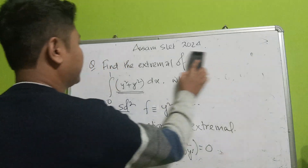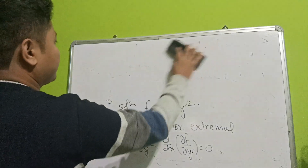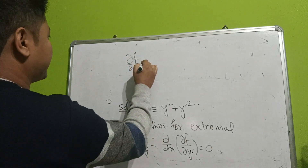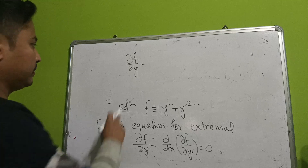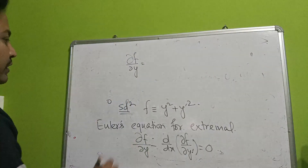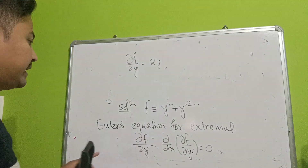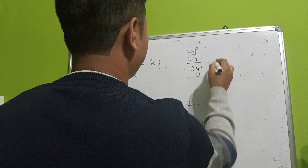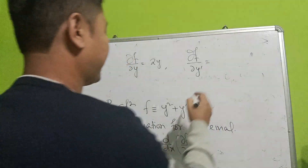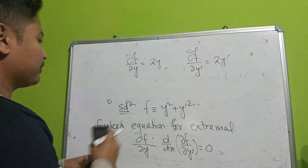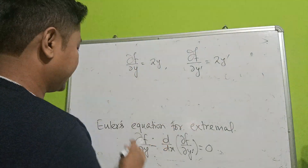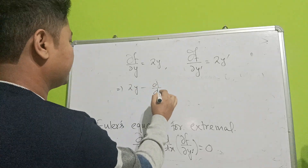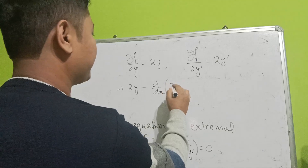So del f by del y means the partial derivative of the given function with respect to y, which gives 2y. Then del f by del y prime gives 2y prime. Substituting into Euler's equation: 2y minus d/dx of (2y prime) equals zero.